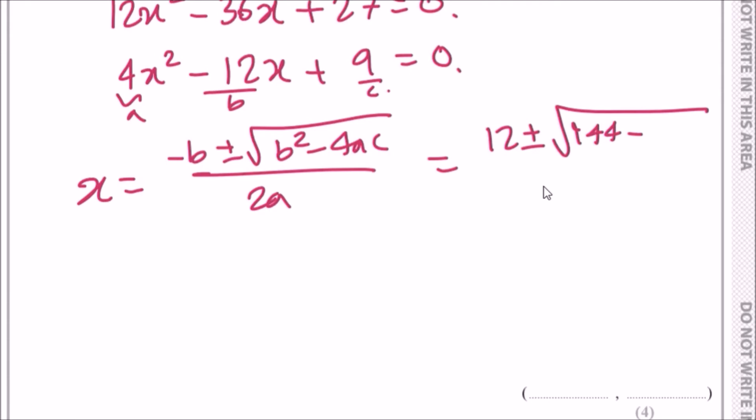All over 2 times a, 2 times 4. Double check the working out and see if you get the same result. Here you should get 12 plus √.